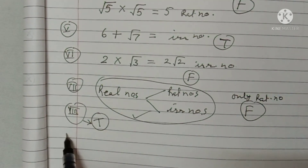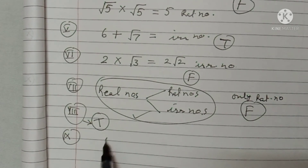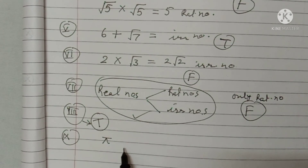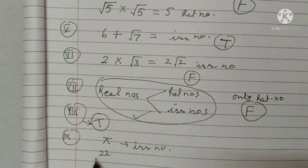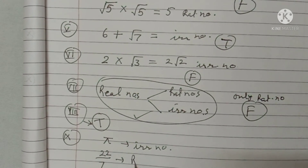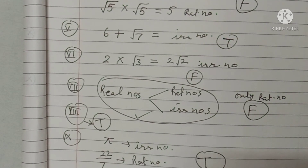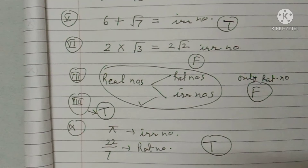Part nine also includes: pi is irrational — true. And 22/7 is rational — this is correct, it is a rational number. So this statement is true. I have given all the reasons for whether the statements are true or false.